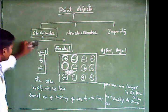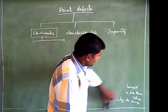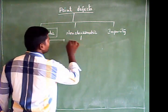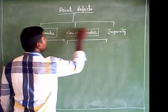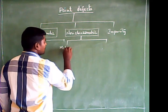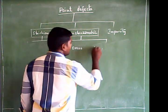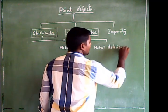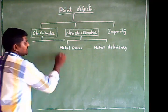Now, non-stoichiometric defects. The name itself denotes it is a non-balanced one. There are two types: metal excess defects and metal deficiency defects.